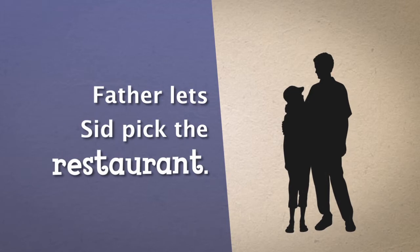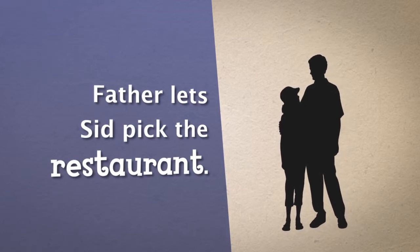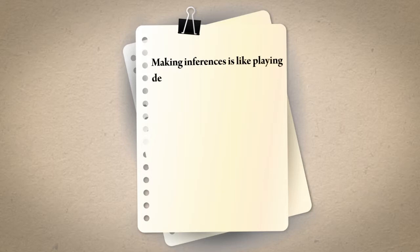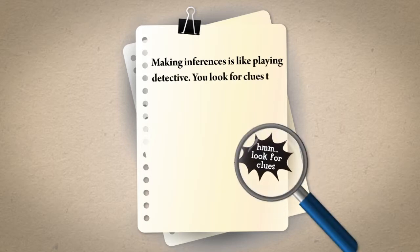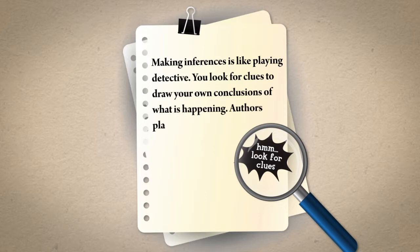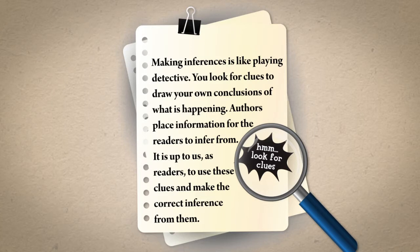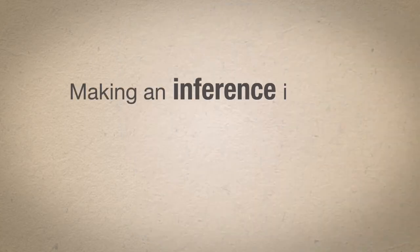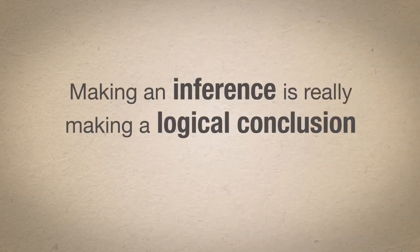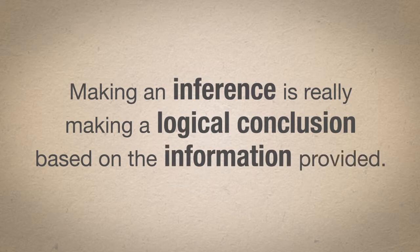Father lets Sid pick the restaurant because he feels a sense of pride in him. Making inferences is like playing detective. You look for clues to draw your own conclusions of what is happening. Authors place information for the readers to infer from. It is up to us, the readers, to use these clues and make the correct inference from them. Making an inference is really making a logical conclusion based on the information provided.